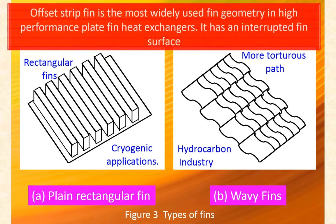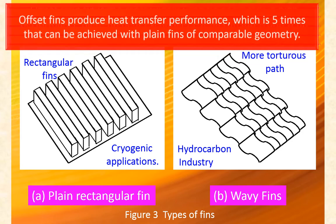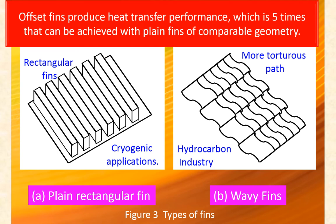Offset strip fins are the most widely used fin geometry in high-performance plate fin heat exchangers. They have an interrupted fin surface. Offset fins produce heat transfer performance approximately five times that achievable with plain fins of comparable geometry.